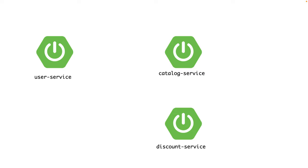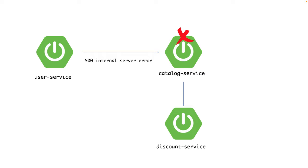In a microservice architecture it's common for a service to call another service, and there is always the possibility that the other service being called is unavailable or unable to respond. To understand that, let's look at a scenario with three microservices: user service, catalog service, and discount service. User service calls catalog service to display all available products in inventory, then catalog service calls discount service to check if any discount offer is available. If catalog service is down, user service will immediately get a 500 internal server error.